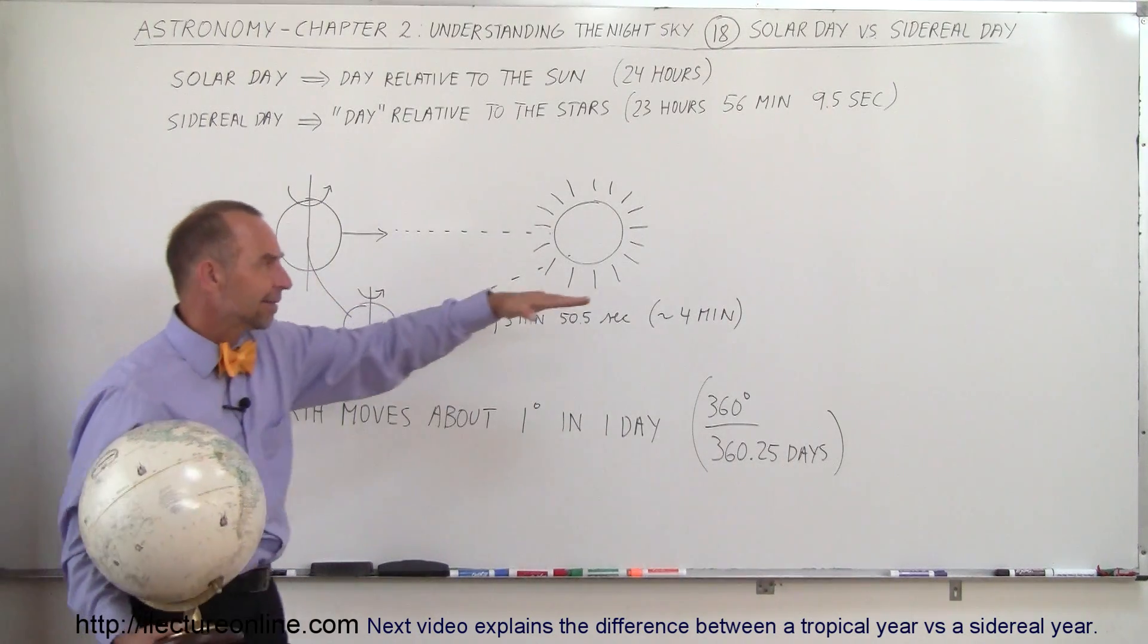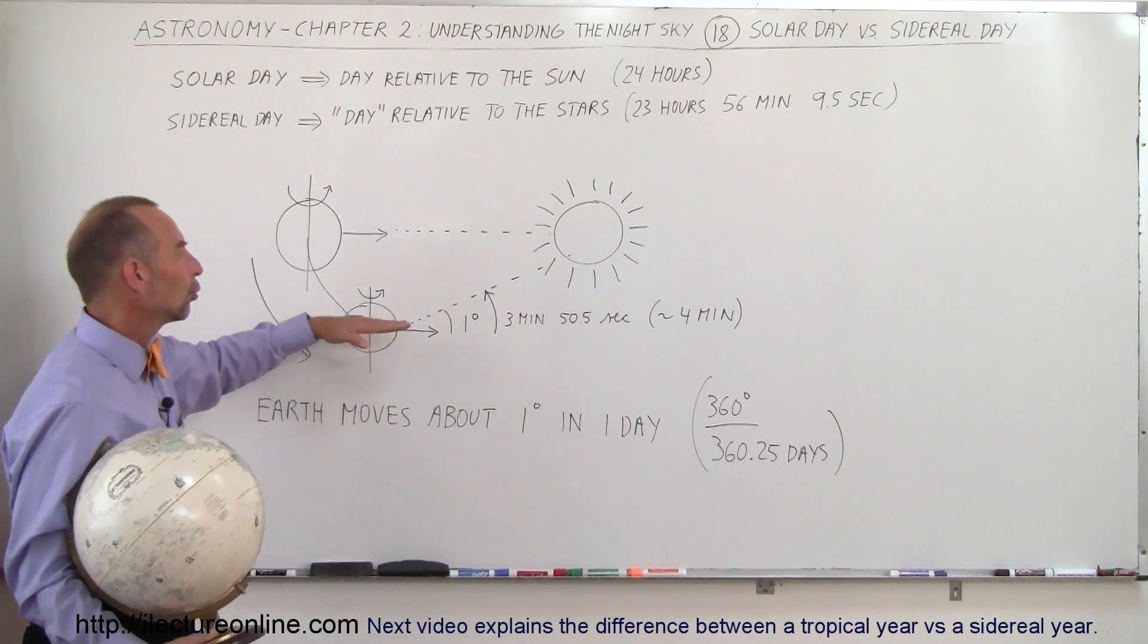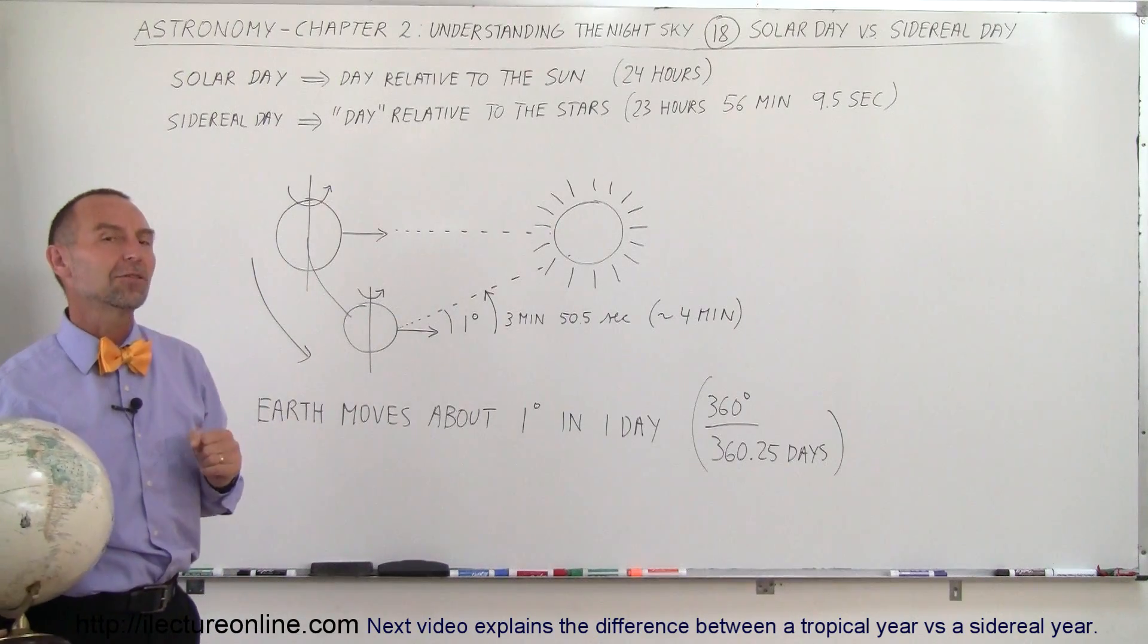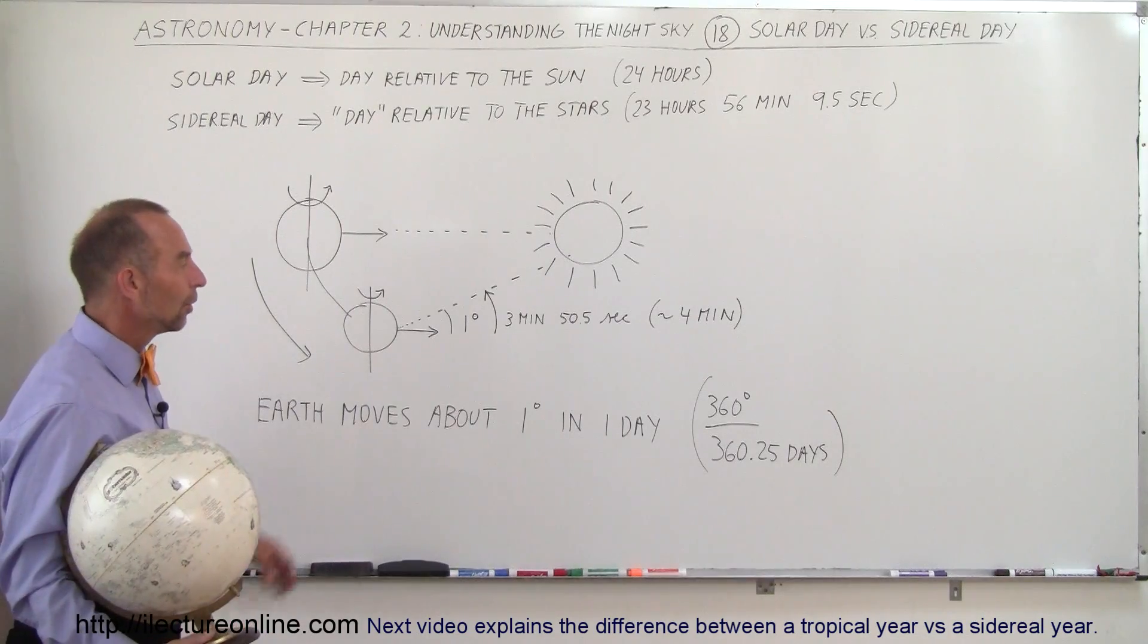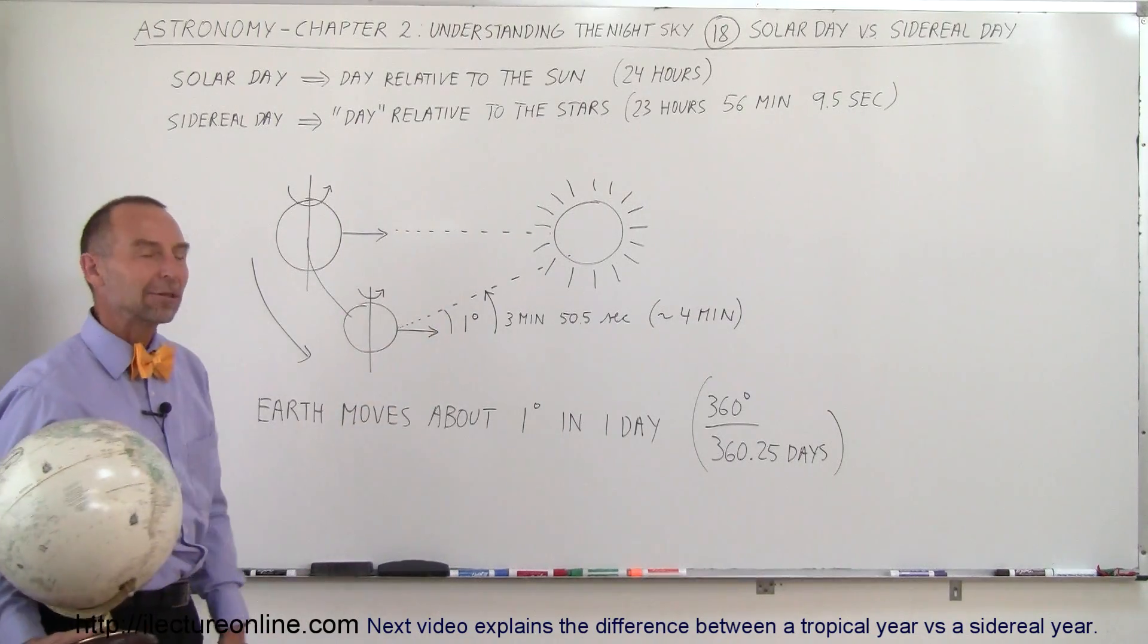But it'll point to the exact same star again after 23 hours, 56 minutes, and about 9.5 seconds. So another four minutes, and you're pointing back to the Sun.